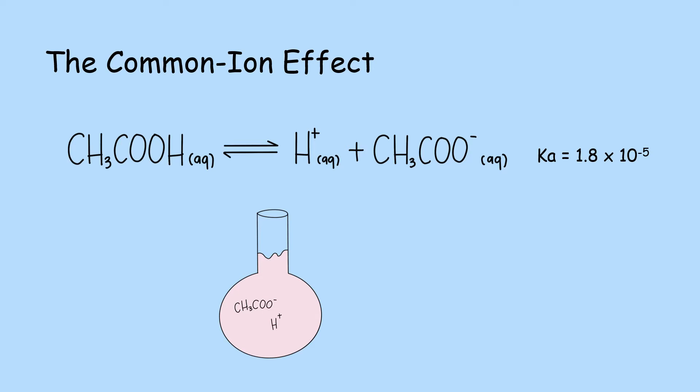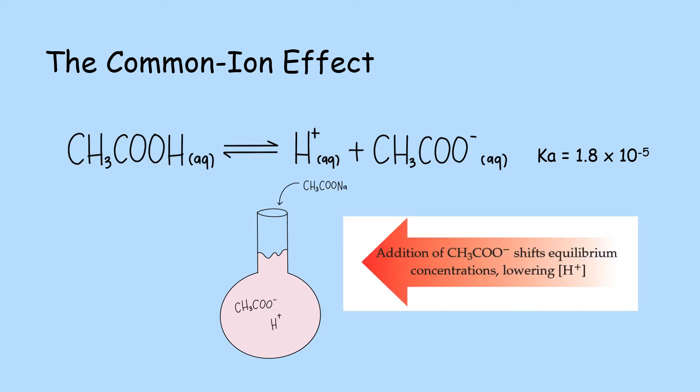If we add sodium acetate to a solution of acetic acid in water, the acetate from the sodium acetate causes the equilibrium concentrations of the substances in the equilibrium reaction of acetic acid to shift to the left, causing the equilibrium concentration of hydrogen ions to decrease. In other words, the presence of the added acetate ion causes the acetic acid to ionize less than it normally would.